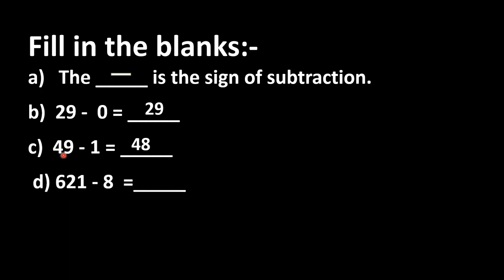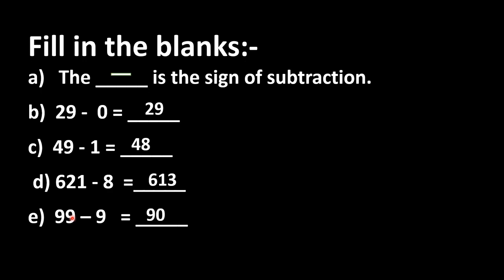In part D: 621 minus 8. Keep 621 in mind and count backward 8 steps: 620, 619, 618, 617, 616, 615, 614, 613. Answer is 613. In part E: 99 minus 9. Keep 99 in mind and count backward 9 steps: 98, 97, 96, 95, 94, 93, 92, 91, 90. Answer is 90.